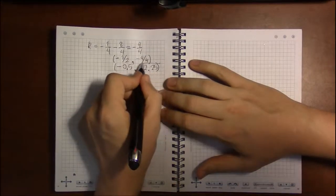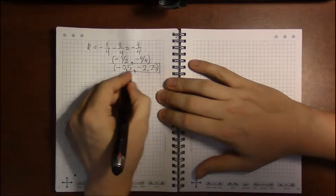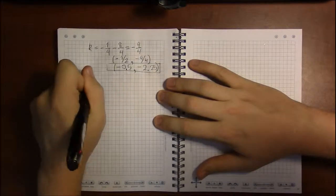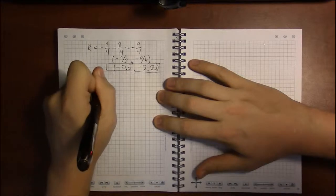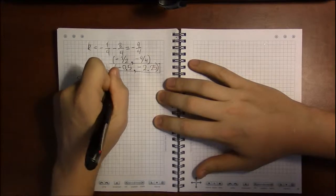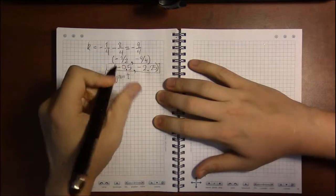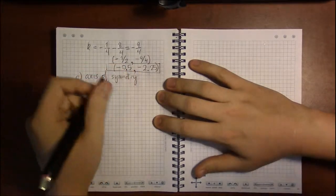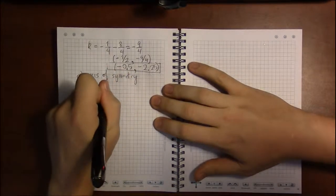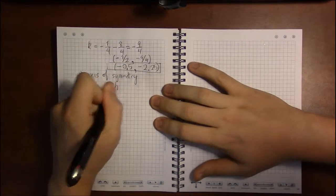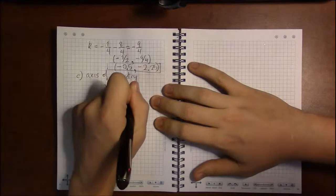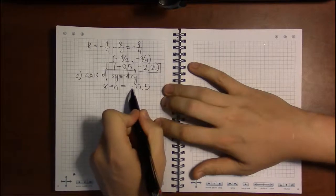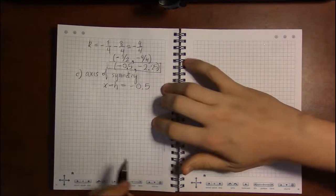Part C asks us to find the axis of symmetry. And that's easy once we know the vertex. Because the axis of symmetry is simply x equals h. Which in our case, h is minus 0.5. So it's the vertical line, x equals minus 1 half.